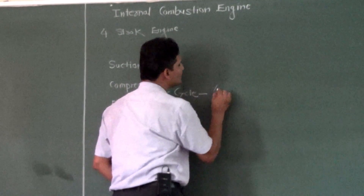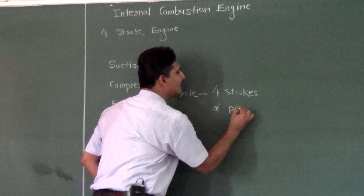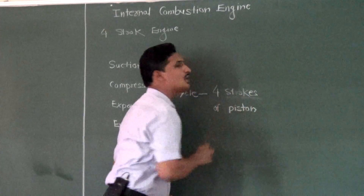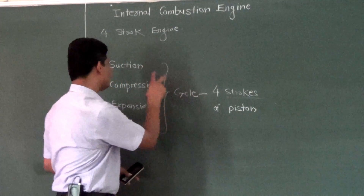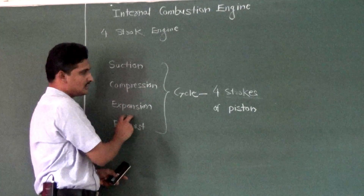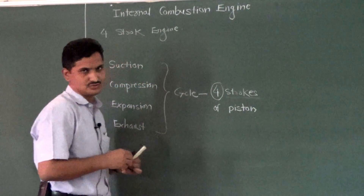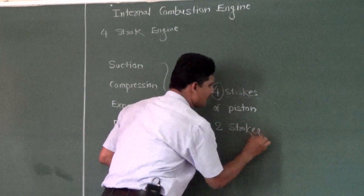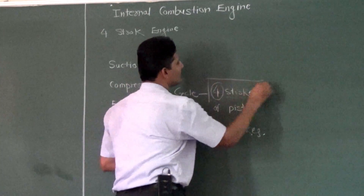If we combine all these four processes we get one cycle. For completing this cycle, if four strokes of a piston are required, then that particular engine is called a four-stroke engine. A stroke is the distance between top dead center and bottom dead center. So if four strokes are required for completing one cycle — suction, compression, expansion, exhaust — then it is called a four-stroke engine. If the complete cycle is completed in only two strokes, then it is called a two-stroke engine.